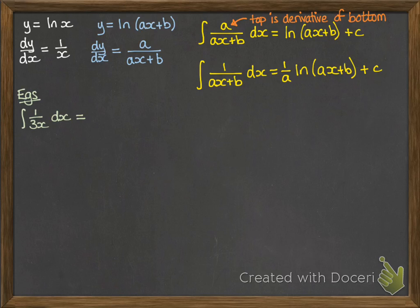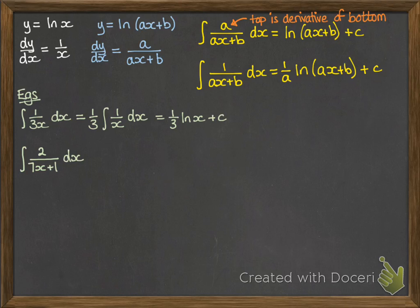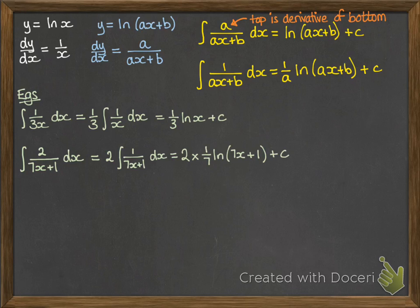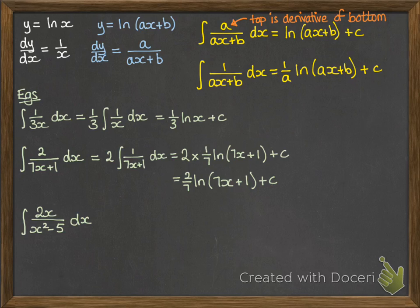Some examples. If you're doing 1 over 3x, we want to get it in a form that's easy to integrate, so first we can take out constants — take out the third, and then we've just got to integrate 1 over x, which goes straight to ln x. So we get a third ln x plus C. Then something like 2 over 7x plus 1: we take out the 2, leaving us with 1 over 7x plus 1 to integrate. We use the rule and take out that seventh, giving ln of 7x plus 1 — then just tidy it up. With the next one, you should recognise that the top of the fraction is the derivative of the bottom, so we can go straight to our answer being ln of the bottom.